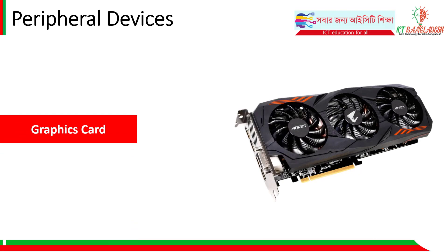A graphics card handles graphical processing. It manages color, animation, and display features for the computer. For gaming, a minimum of 2GB graphics memory is recommended. High-performance computers — for graphic designers, video editors, or gamers — require a high-performance graphics card.